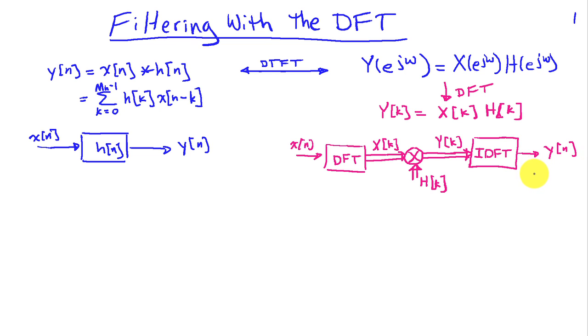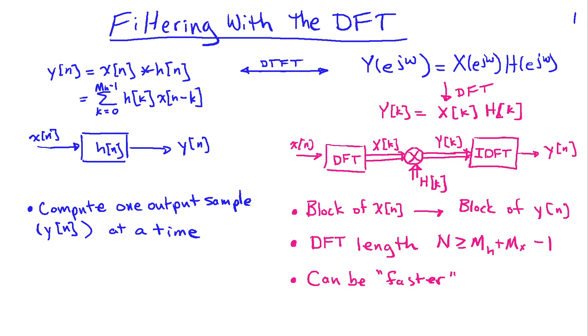Provided that we choose the lengths of our DFT appropriately and x[n] is finite duration, then this all works fine. So we have the insight of multiplication and we can do this computationally as well. Now let's just compare these two approaches.